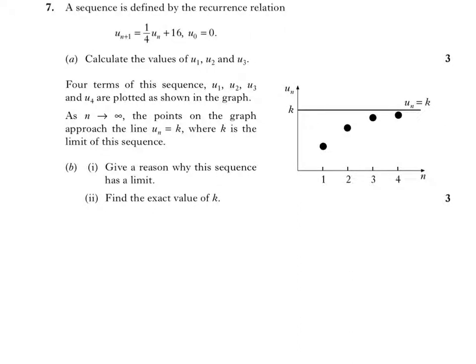Section 17, question 1. The sequence is defined by the recurrence relation U_{n+1} equals 1 quarter U_n plus 16. U_0 equals 0. Find the values of U_1, U_2 and U_3.